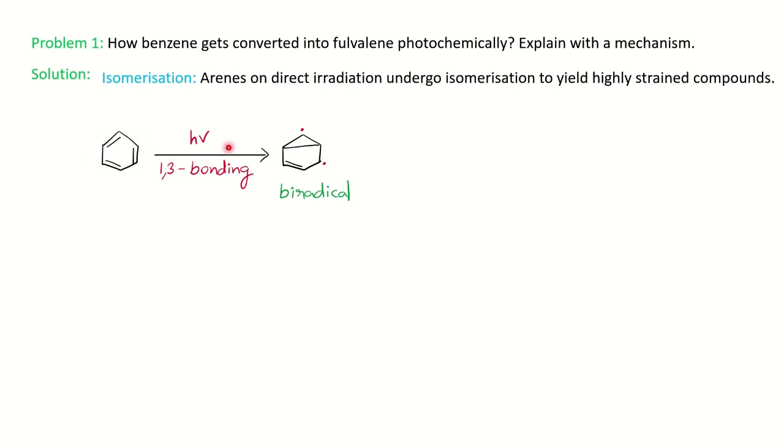So we will see the mechanism now. You have benzene on photochemical irradiation. Here 1-3 bonding occurs. You can see if you give 1-2-3, so a free radical if you form here, 1-3 bond is going to form leaving behind the free radical here.